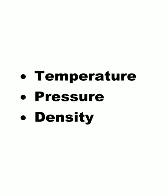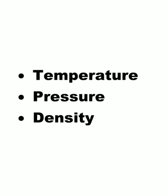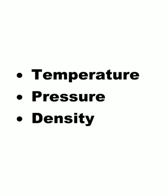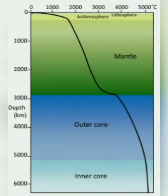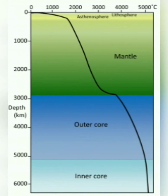From the graphs, you will understand that these three things — temperature, pressure, and density — are all continuously increasing with depth. For temperature, for every 32 meters of depth, the temperature increases by one degree centigrade. So at around 48 kilometers depth, the temperature will be 1,200 to 2,000 degrees centigrade.